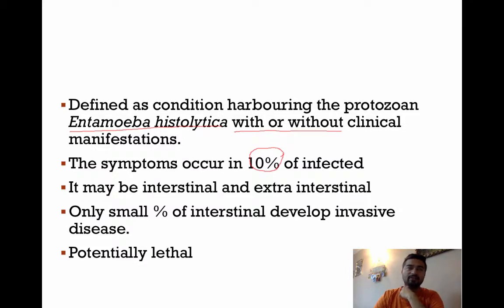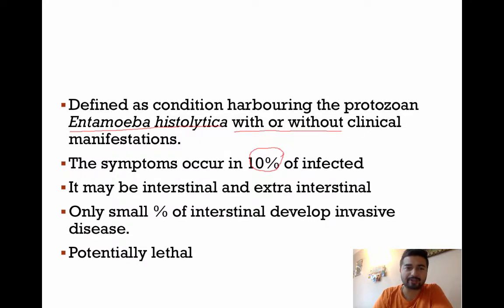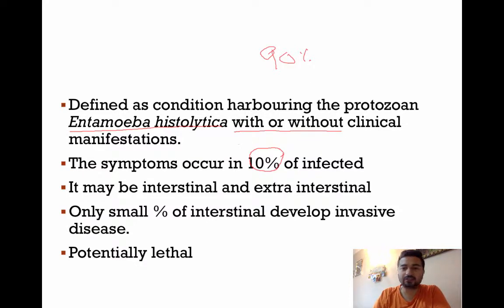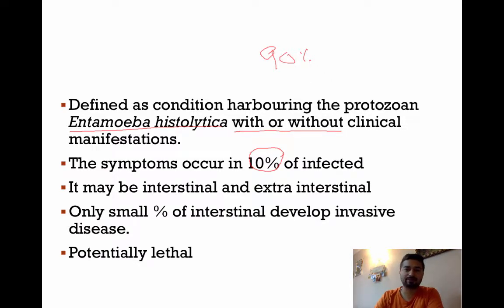There are a lot of other entamoebas that infect humans — many are commensals and are not pathogenic. The disease caused specifically by Entamoeba histolytica is called amoebiosis, not by any other parasite or protozoan. Remember that 90% of infected people will be asymptomatic; the disease manifests in only 10%. That might give an illusion that the disease is harmless, but it can cause perforations, ulcerations, flask-shaped ulcers, metastasis to multiple organs, and even death.